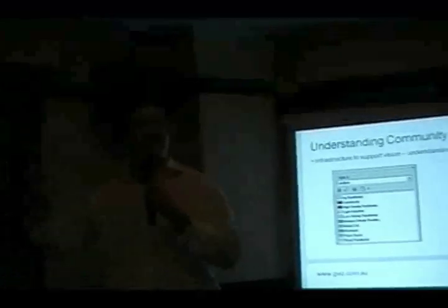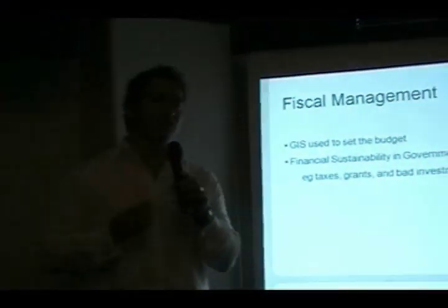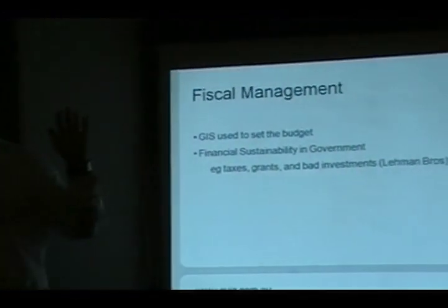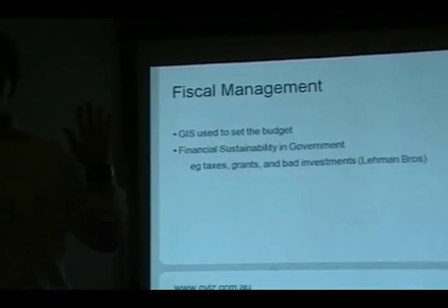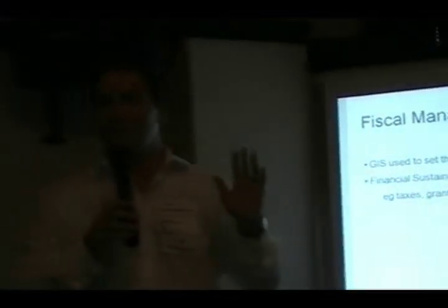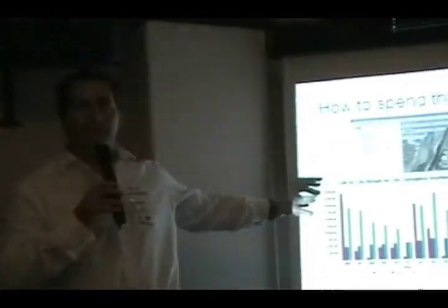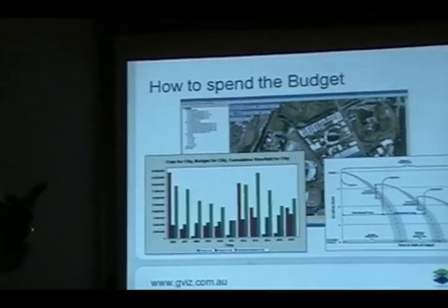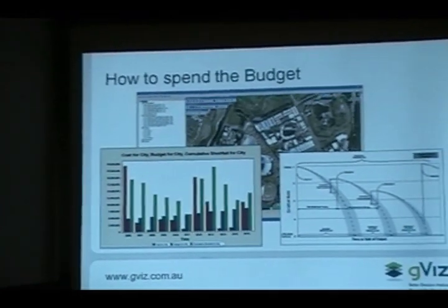The misunderstood part of GIS — the database side. So we can understand the cost of developing residential water, schools, and vehicle trips. The cost of the environment in developing that particular vision. So cost — we start looking at budget. What's the budget needed to support that particular vision? We've got limited taxes, limited grants, and local governments like investing in Lehman Brothers — so we're losing money as well. So we need to manage that budget sustainably. GIS can also be used to develop a sustainable way in which local governments and governments generally spend that money.